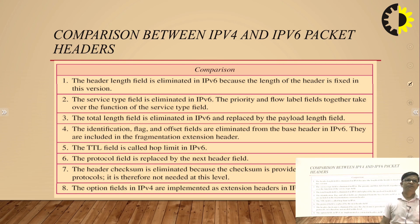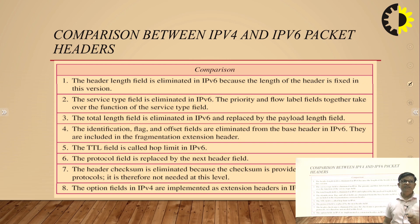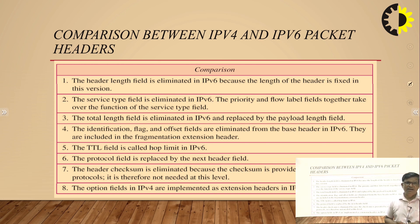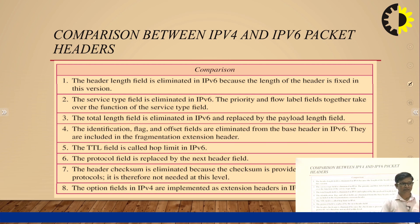This is the comparison of IPv4 and IPv6 packet headers. The header length field HLEN is eliminated in IPv6, because the header length is fixed in IPv6 while in IPv4 it is not fixed — HLEN is 20 bytes fixed. The service type field is also eliminated in IPv6; the priority and flow label fields together replace the service type field, which was later treated as differentiated services.